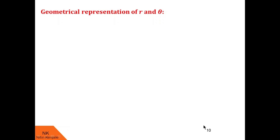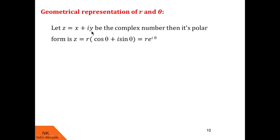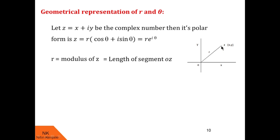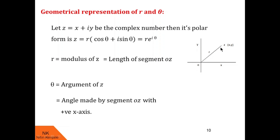Now let us see the geometrical representation of r and theta. When z equal to x plus iy is the complex number, its polar form is given by z equal to r into cos theta plus i sin theta, which is the same as r into e raised to i theta. This r, which is modulus of z, is the length of the segment OZ where z is the complex number plotted in the Argand plane. And theta, which is argument of z, is the angle made by segment OZ with the positive x-axis. I hope you understood what is r and theta, that is modulus and argument of the complex number z equal to x plus iy.